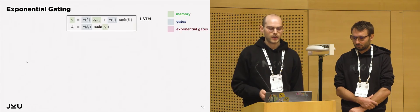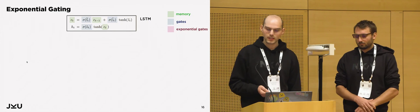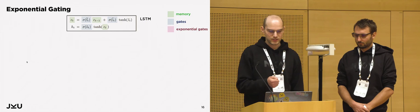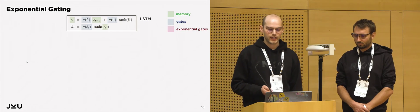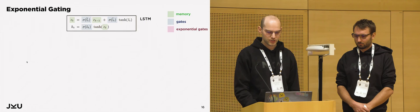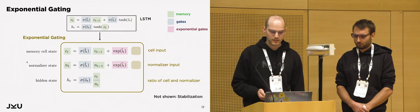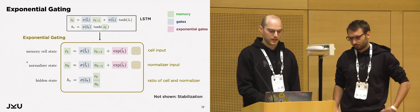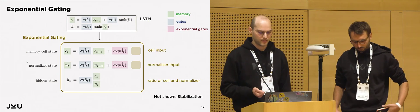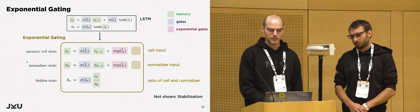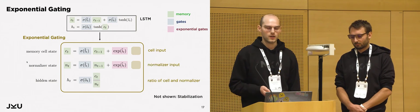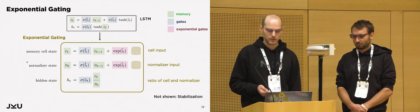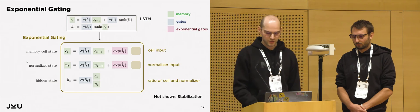Looking at the formulas: the original LSTM equations are shown with the memory structure C highlighted in green and the gates in blue. To get from the original LSTM to exponential gating, we make the input gate exponential and add the second normalizer state n. The output is then the ratio between the cell state and the normalizer. The stabilization is not shown here on the slide, but I highly recommend checking out the paper for those details to make exponential gating actually work.